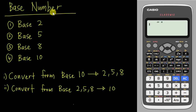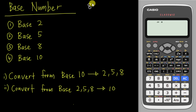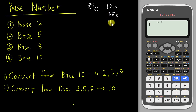First you need to understand that for base numbers in SPM, you have four different bases: base 2, base 5, base 8, and base 10. Base 10 is just a normal number you use every day — like 84. If I write 84 with no base shown, it basically means base 10. If I want to show base 2, I write a small letter 2; similarly 75 base 8, or 43 base 5. If I don't write anything, like just 84, it means base 10.